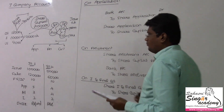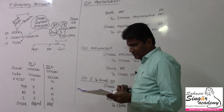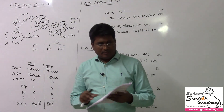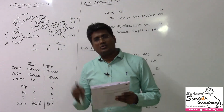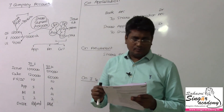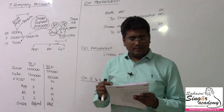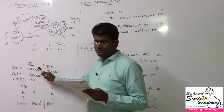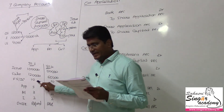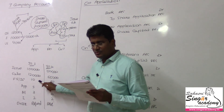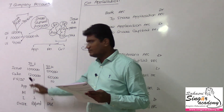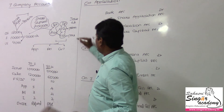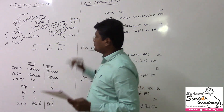Now, illustration number 3 — the oversubscription case in a problem. Bharat Limited issued 1 lakh equity shares at rupees 10 each to the public at par. Issue price and face value are the same, so this is a par issue.